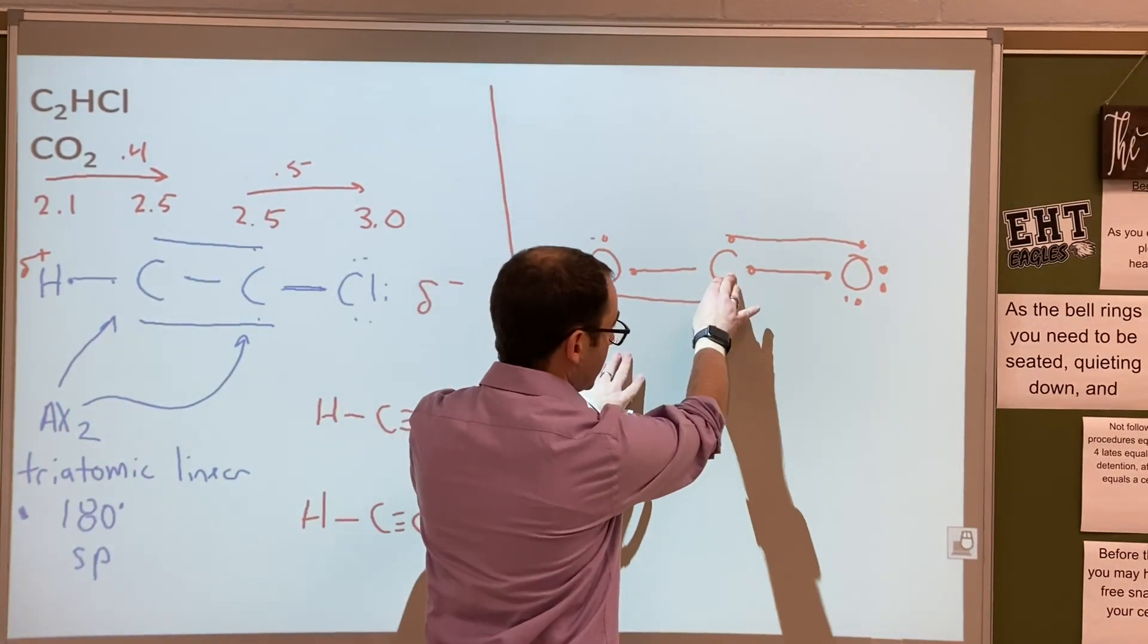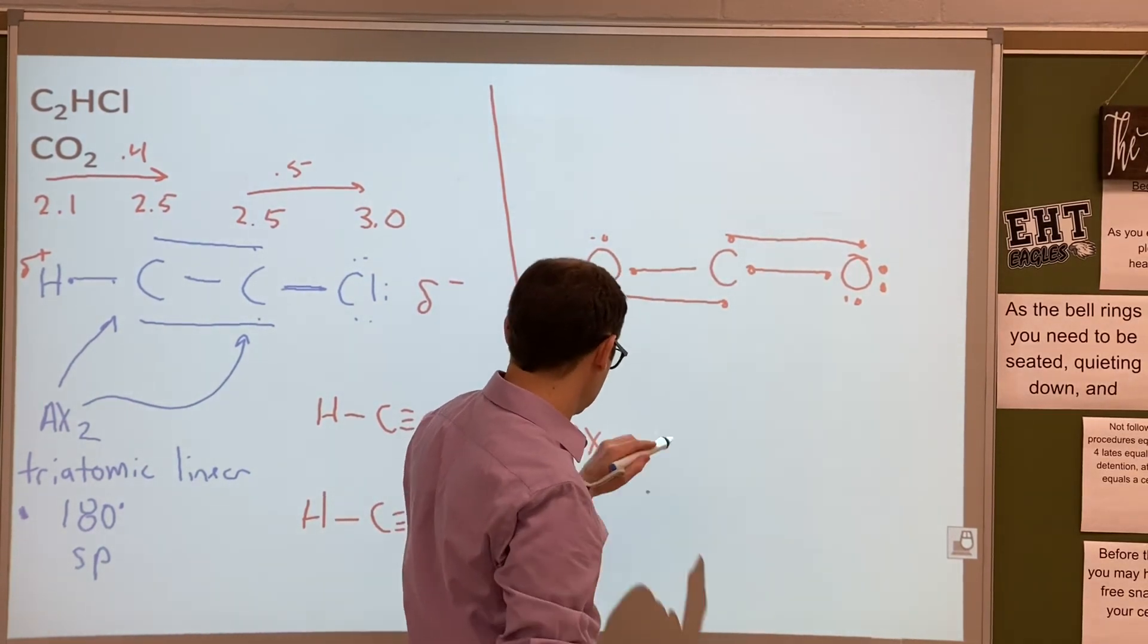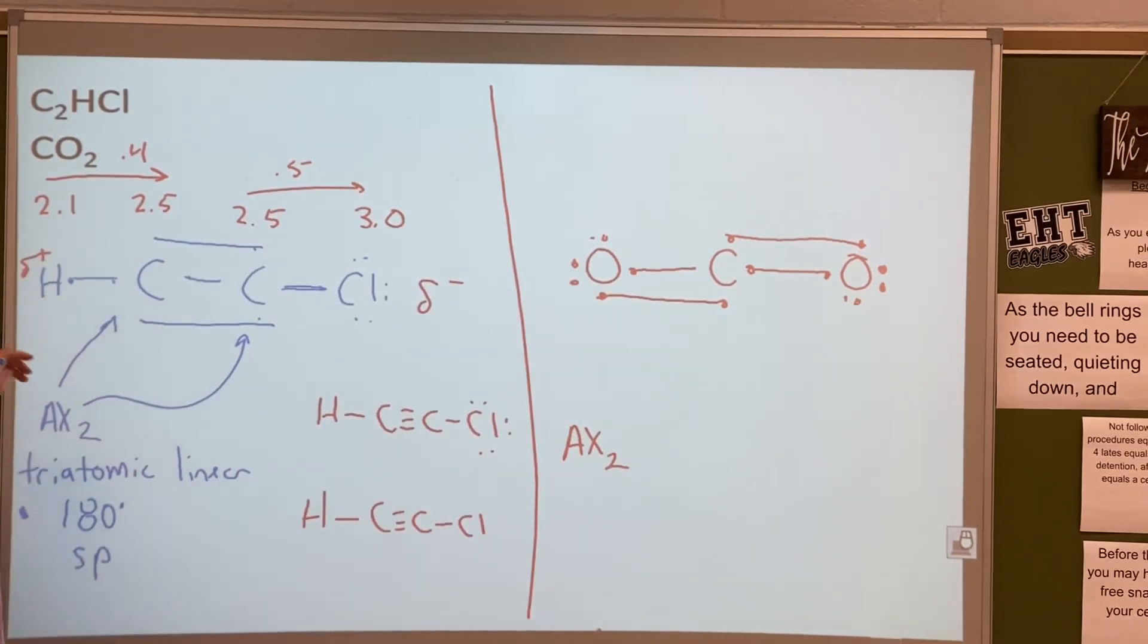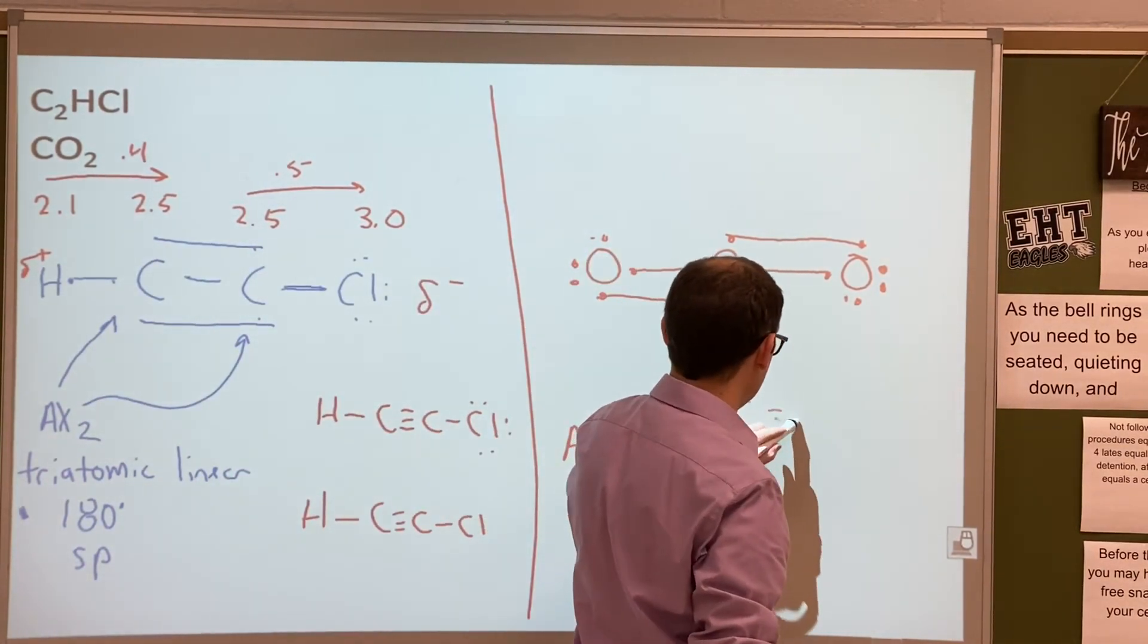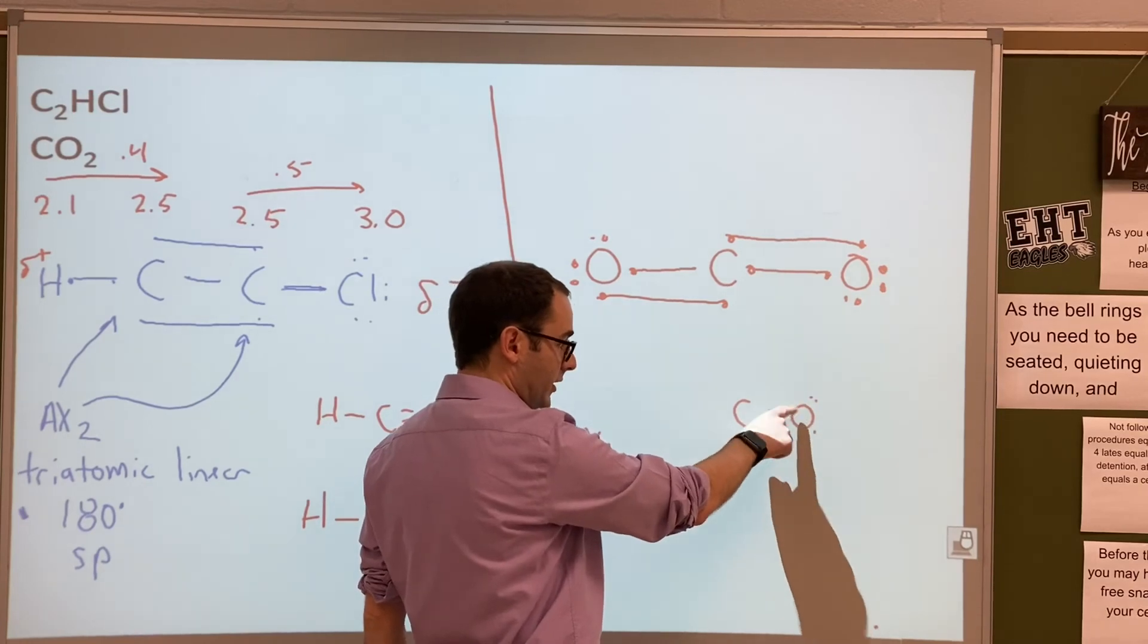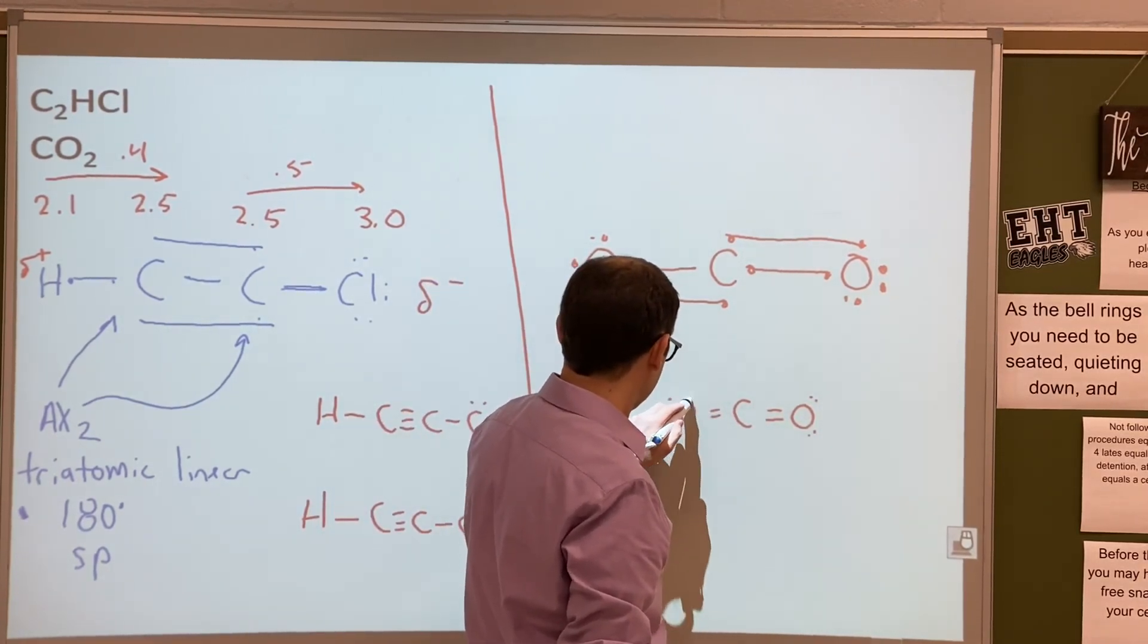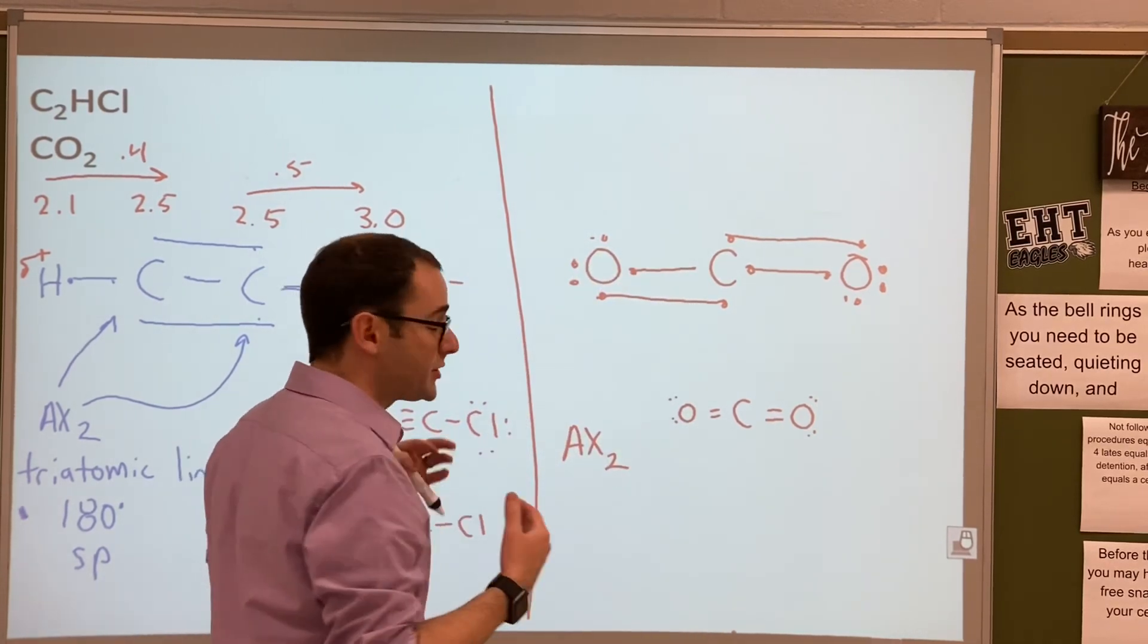Central atom is the carbon. What's the AXE for this one? AX2. So it's going to be the same as all of this. Triatomic linear, 180 SP, right? I'm cleaning this up. It's going to be carbon double bonded to oxygen. Whenever you have a double bonded oxygen, the electrons are going to have that funky kind of angle to it. Same thing over here. So that looks good.